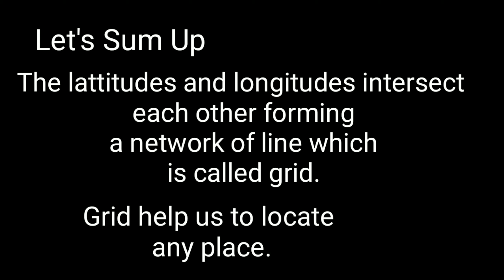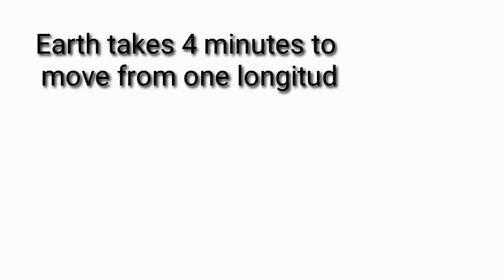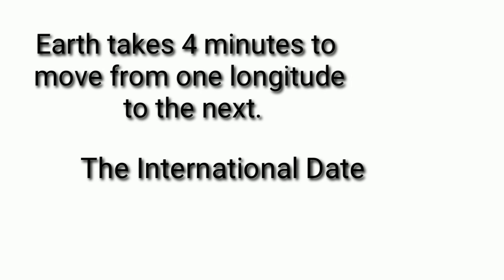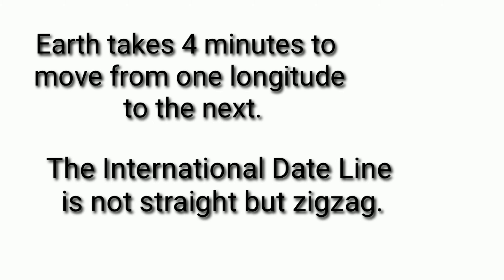Now let's sum up. The latitudes and longitudes intersect each other, forming a network of lines which is called a grid. The grid helps us to locate any place. The earth takes 4 minutes to move from one longitude to another. The international date line is not straight but zigzag. Thank you.